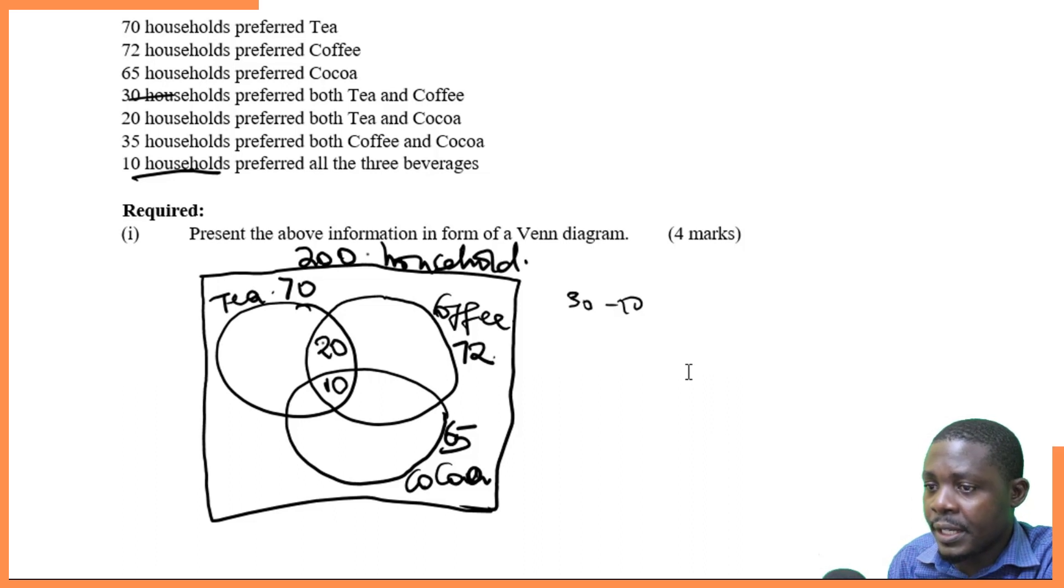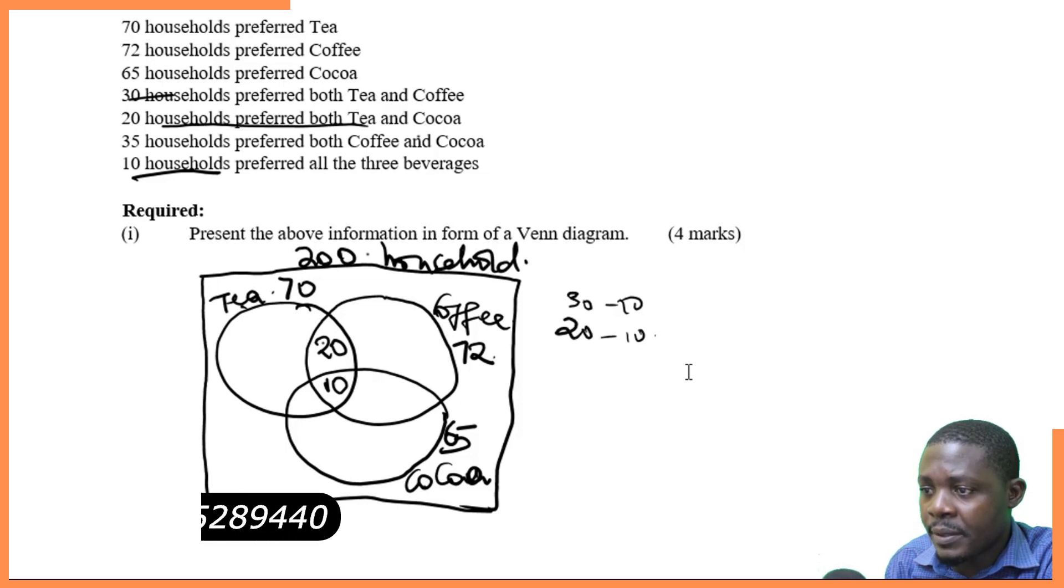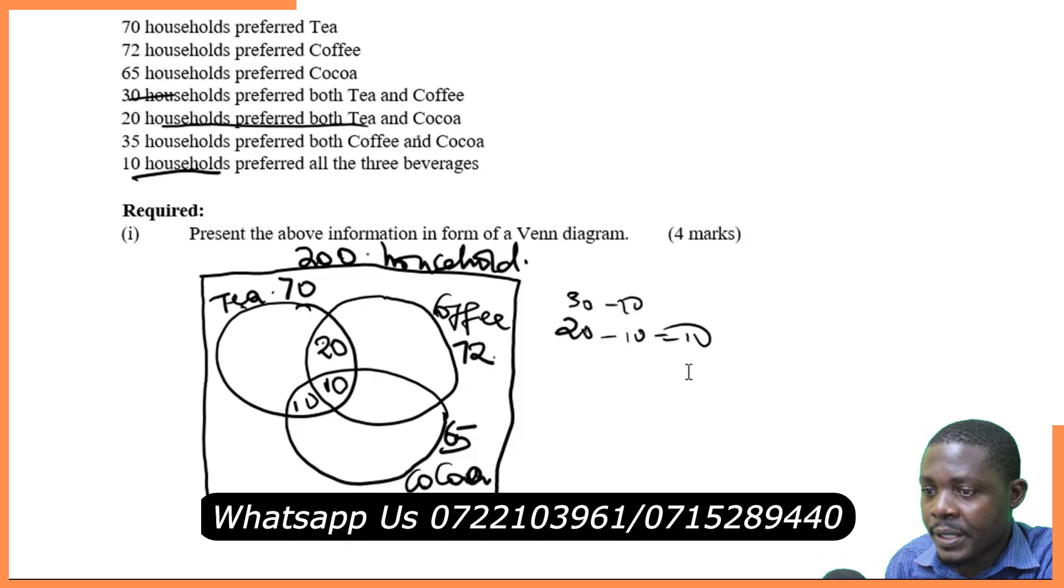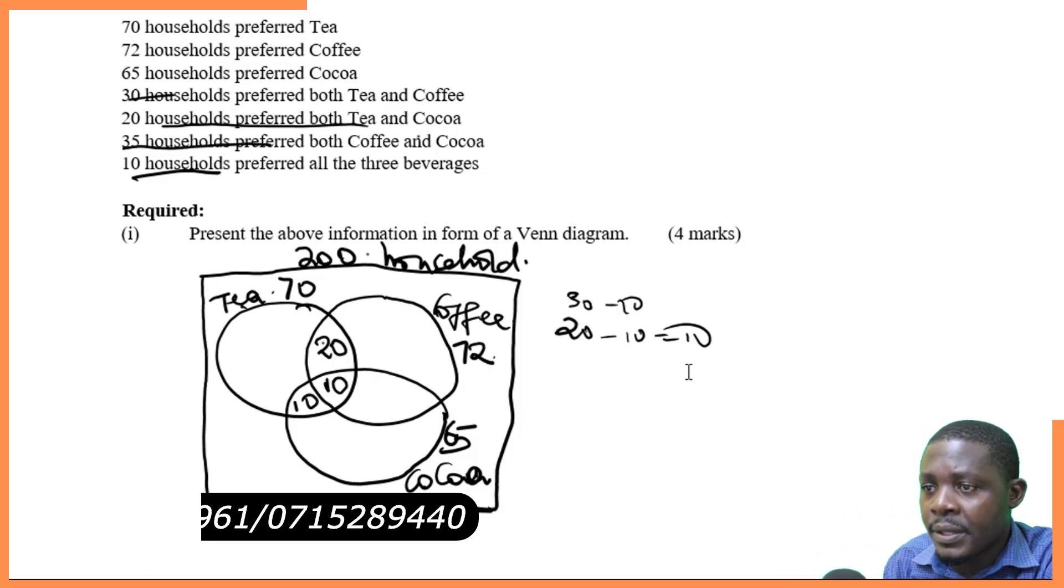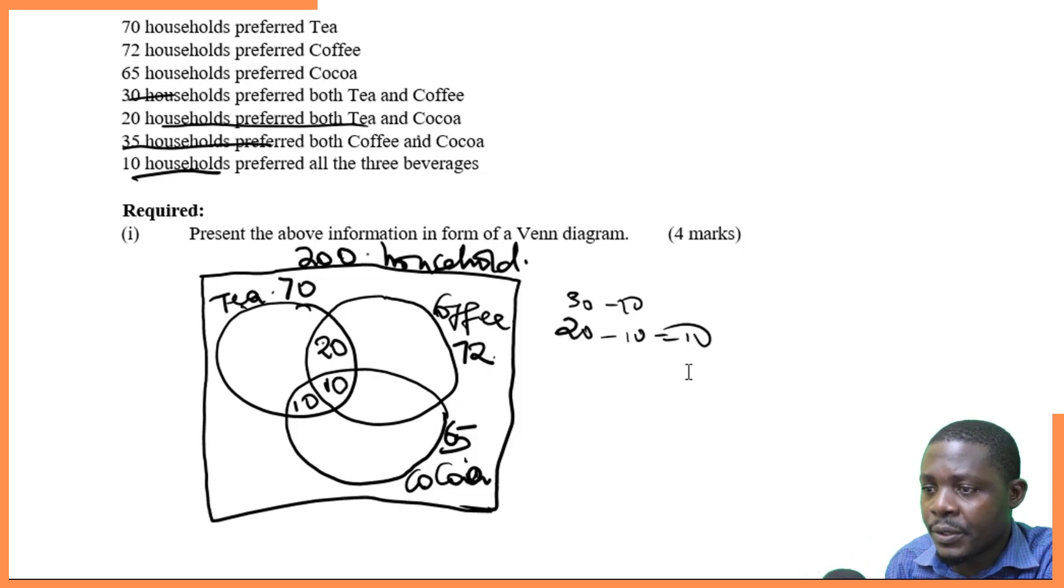Then we have 20 households preferred tea and cocoa. Here we have 20. We do the same, 20 minus 10, we are having 10. We have 10 at this point. Then 35 households preferred both coffee and cocoa. That's 35. We can also do the same, 35 minus 10, we are having 25 at this point, 25.